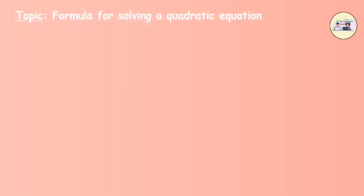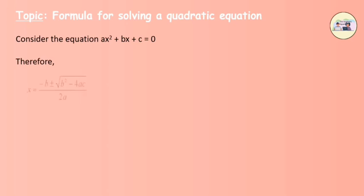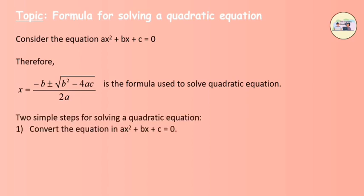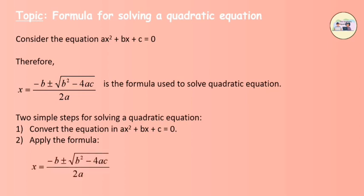Formula for solving a quadratic equation: consider the equation ax² + bx + c = 0. The formula used is x = (-b ± √(b² - 4ac)) / 2a. There are two simple steps: first, convert the equation into the form ax² + bx + c = 0; second, apply the quadratic formula.